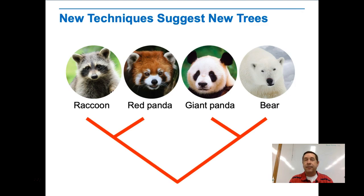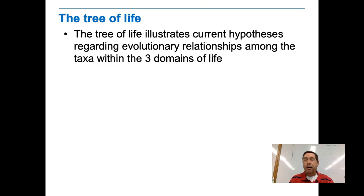Some of these new techniques have changed the tree of life and how we classify things. Red pandas, for instance, used to be grouped with bears, but molecular biology evidence suggests they are more closely related to raccoons. The tree of life — which started with Darwin, who drew similar diagrams — illustrates current hypotheses regarding the evolutionary relationships among the taxa within the three domains of life.